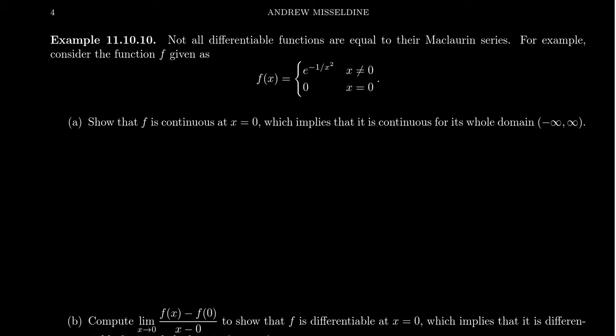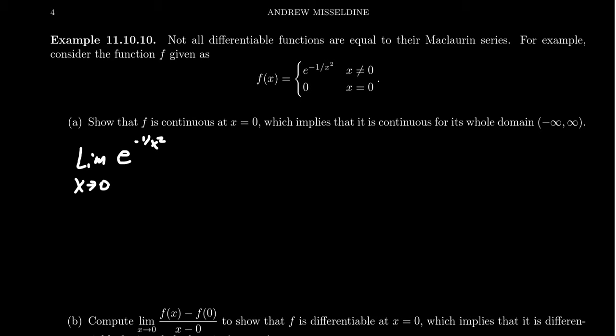What we want to do is take the limit as x approaches zero of e to the negative one over x squared. Now notice that if you just plug in x equals zero, you get e to the negative one over zero squared, which is clearly undefined. So although the function can't be evaluated at zero for that piece, we can take the limit as x goes to zero.